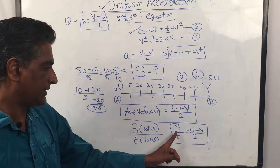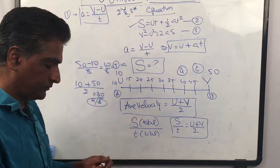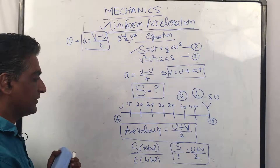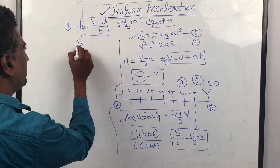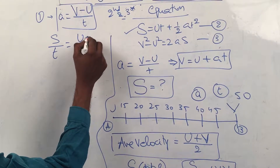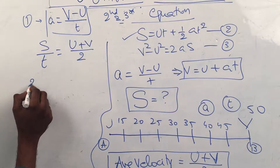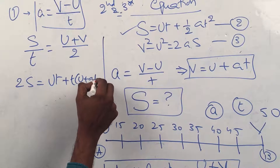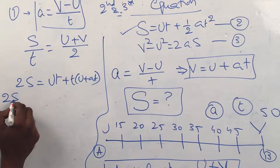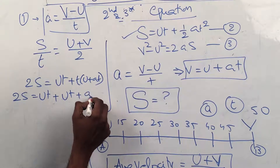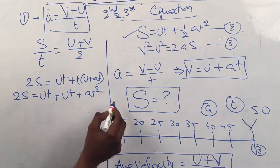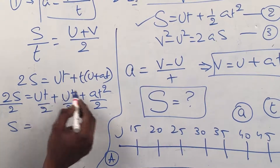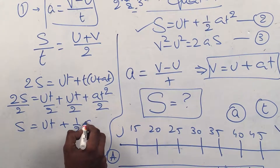From s / t = (u + v) / 2, we cross-multiply to get 2s = (u + v) t. Replacing v with (u + at), we get 2s = ut + ut + at², which simplifies to 2s = 2ut + at². Dividing through by 2 gives the second equation: s = ut + ½at².